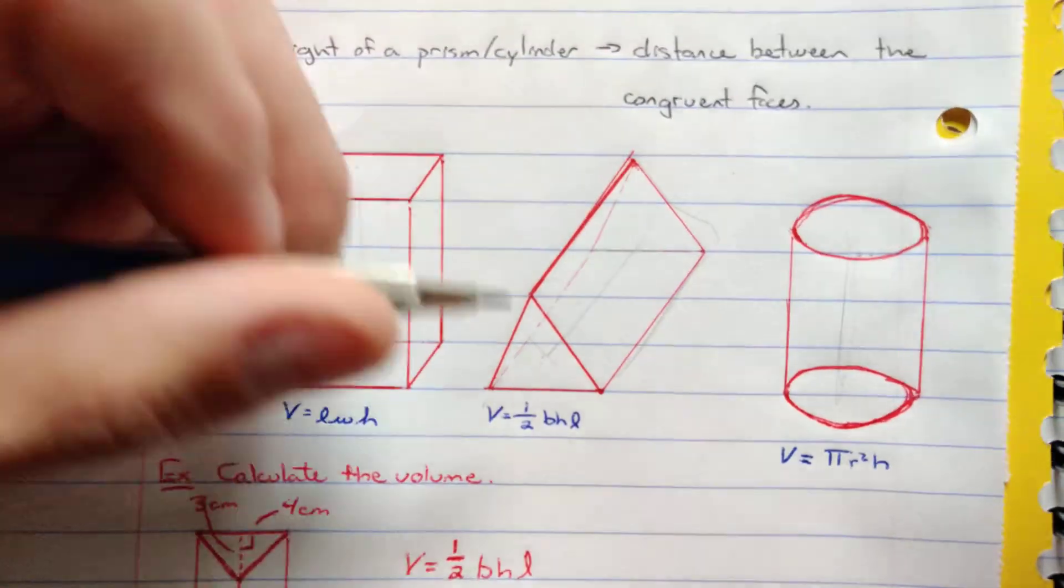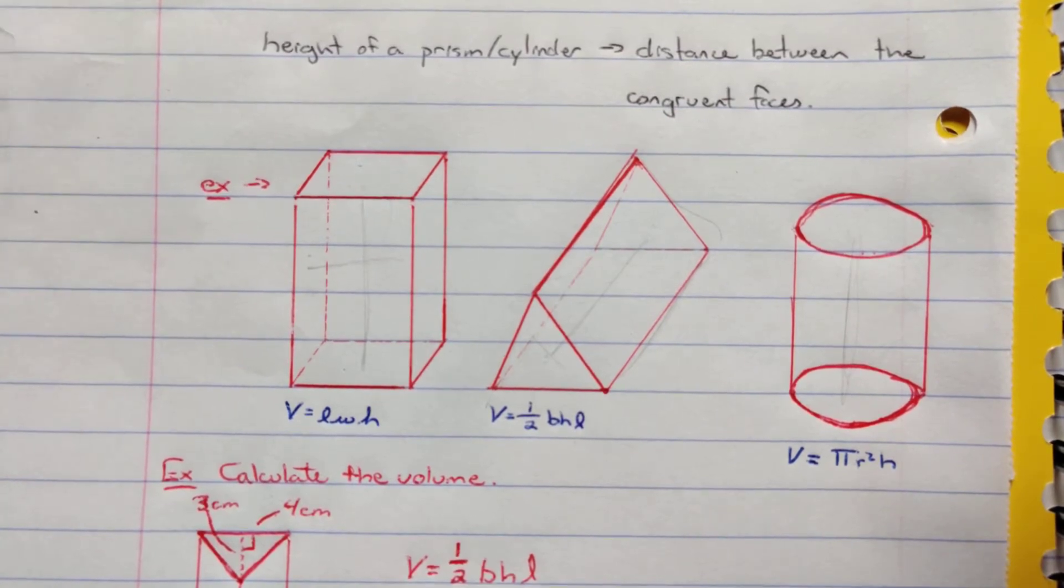So if you take your base shape, square, triangle, circle, find the area of that and multiply it by the height. And that'll give you the volume.